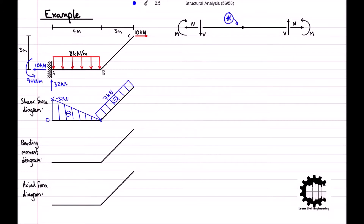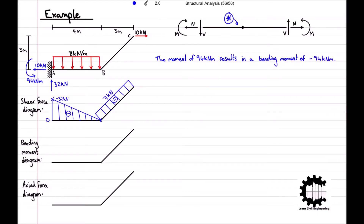Moving on to the bending moment diagram, starting at the left end of the bar we have a moment of 94 kilonewton meters acting in the anti-clockwise rotation direction being applied to point A. Referencing back to our starred diagram, for the left side of the bar at point A a positive moment acts in the clockwise rotation direction, so the moment of 94 kilonewton meters acting anti-clockwise results in a bending moment of negative 94 kilonewton meters at point A.